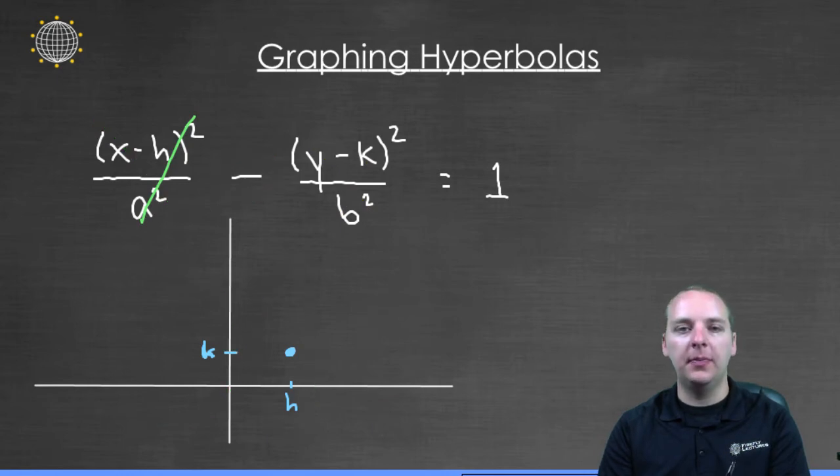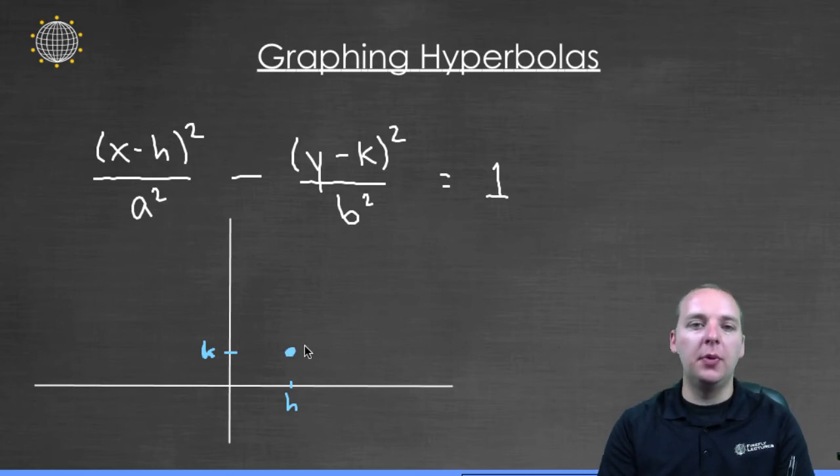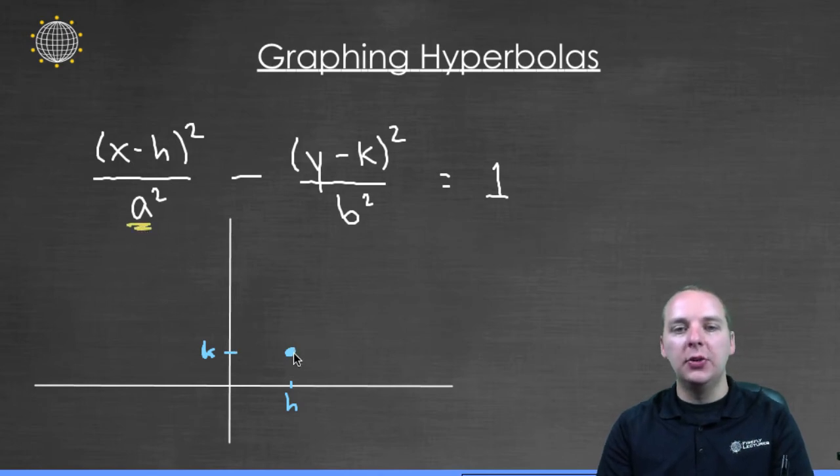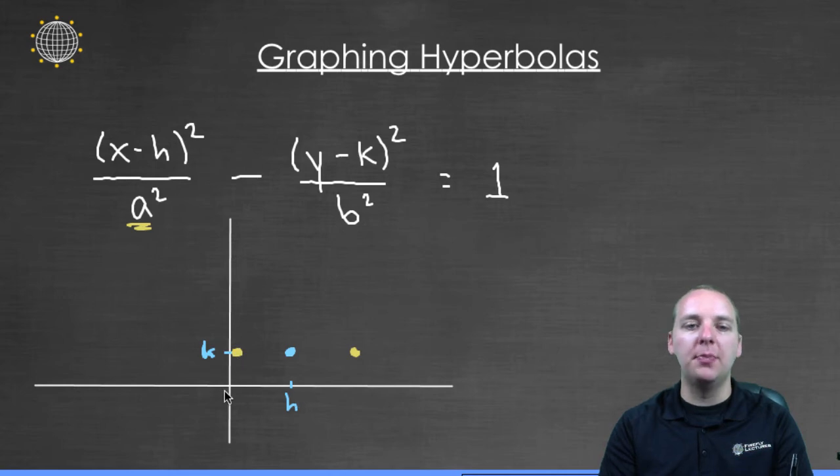So this particular hyperbola opens left and right. And more specifically what we know from an earlier video is that the vertices lie to the left and to the right exactly a units. So you go a units in this direction, h plus a. And then a units in the other direction, let's just call it like right here, h minus a.